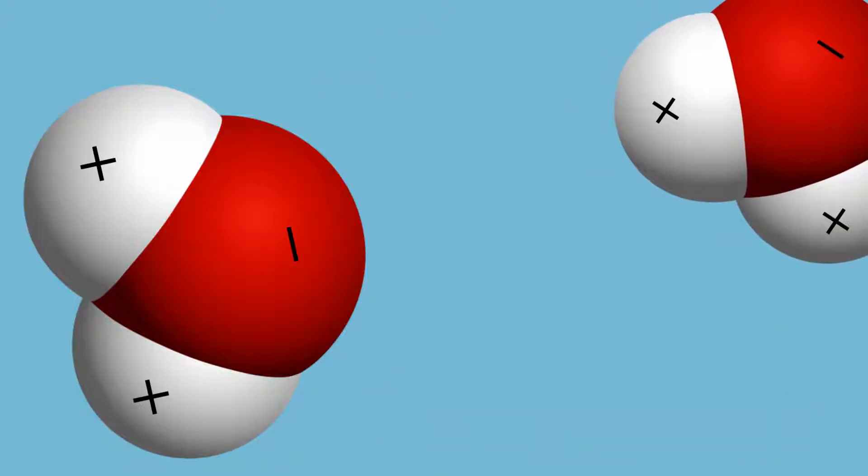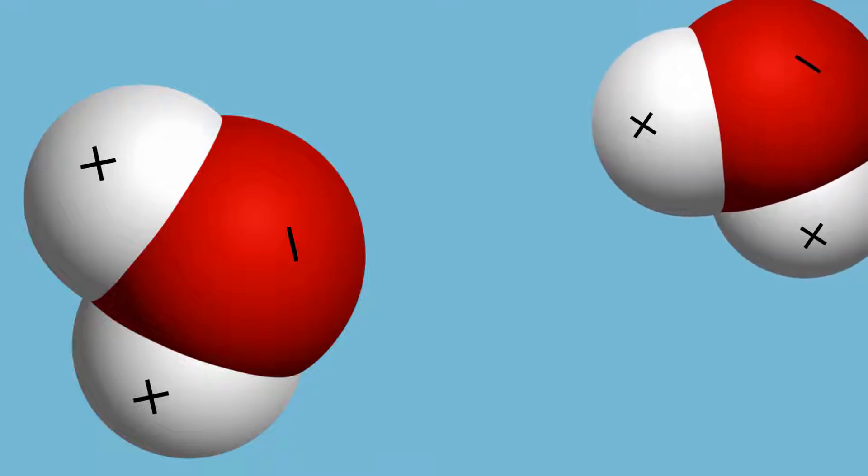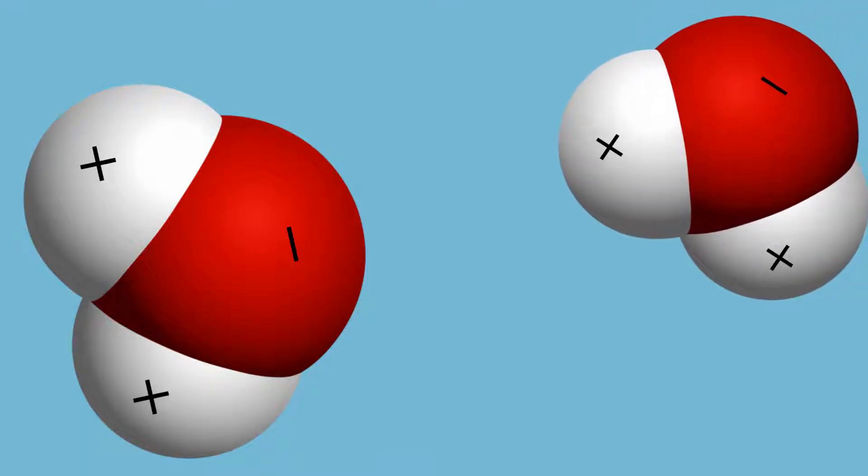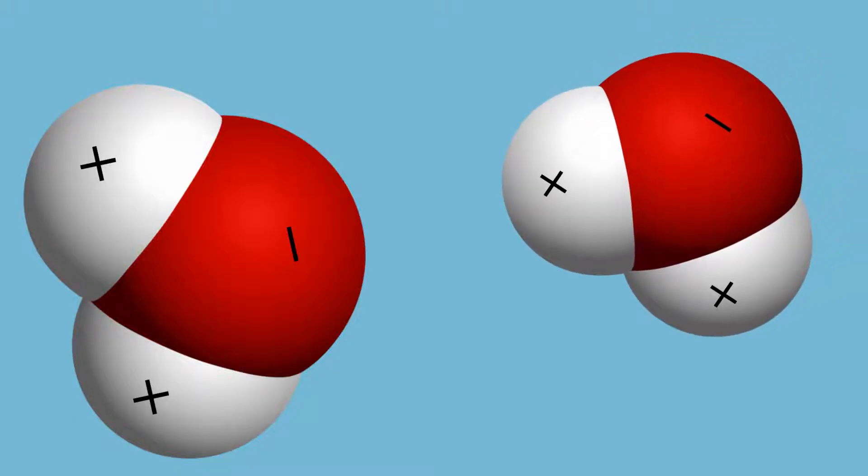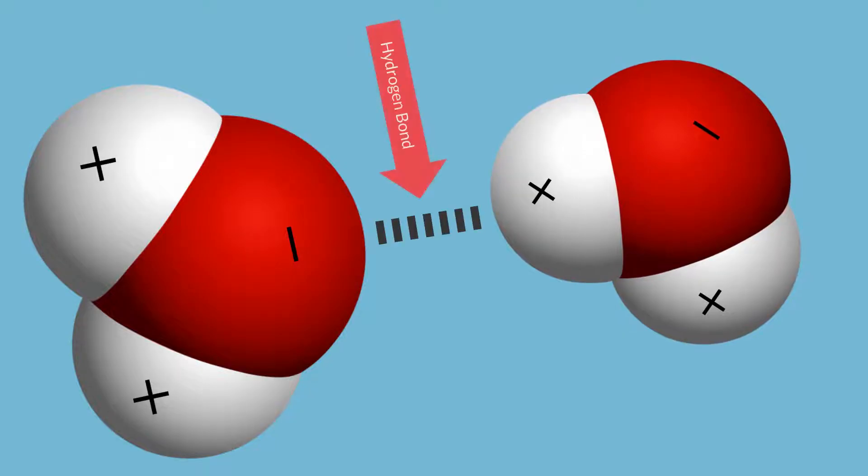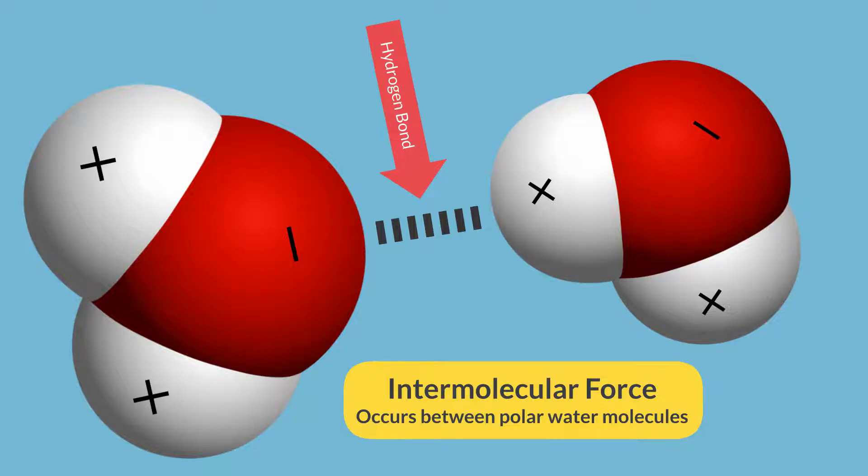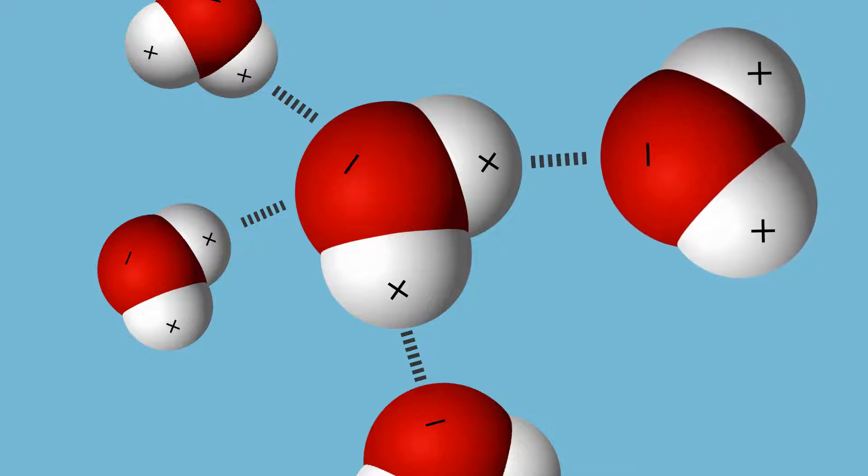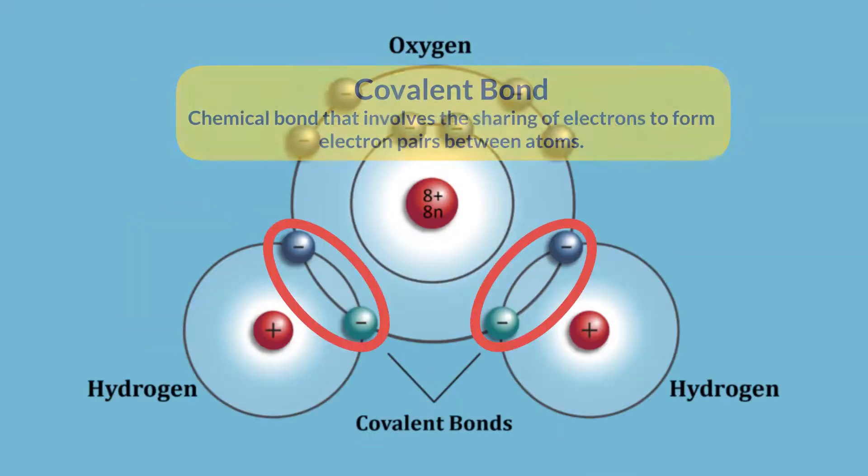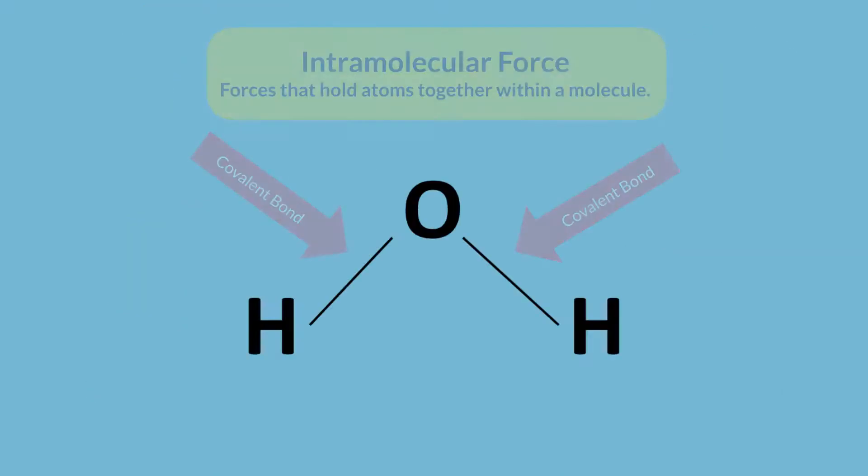Water molecules form hydrogen bonds when the positive hydrogen end on one water molecule is attracted to the negatively charged oxygen end of another water molecule. Hydrogen bonds are always breaking and reforming, and they can form up to four hydrogen bonds at any time with each other. Though these bonds are strong, they are not nearly as strong as covalent bonds, which are a type of intramolecular force.